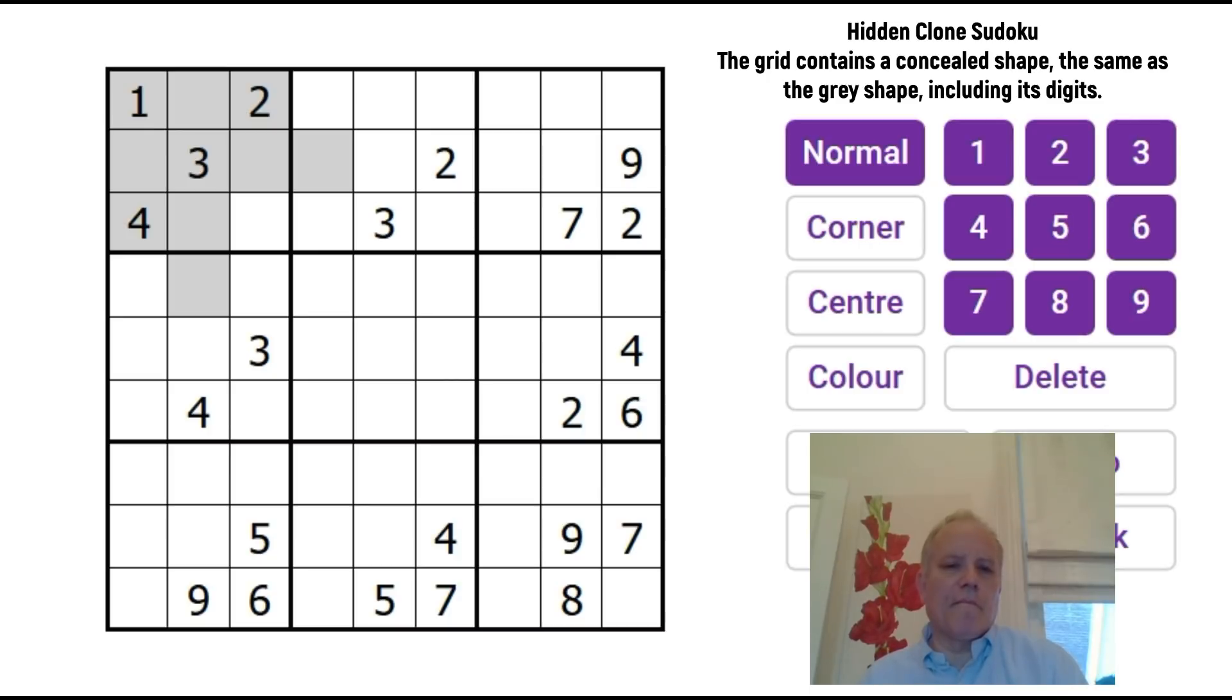I think good solver and a really good computer programmer has now set us a puzzle as well. And this is a completely new variant. I'm calling it Hidden Clone. And the rules are that there's one shape in the grid, as you can see, and that shape has a clone somewhere in the grid where exactly the same numbers appear in the same pattern. So we have to find that as well as complete the rest of the grid by normal Sudoku rules. So I'm going to have a go. And let's start with a bit of normal Sudoku, ignoring the shape for now.